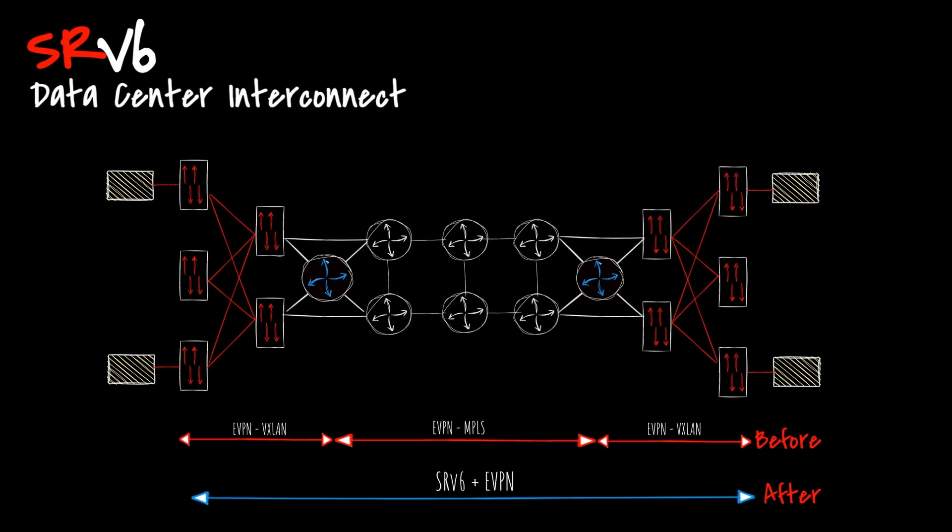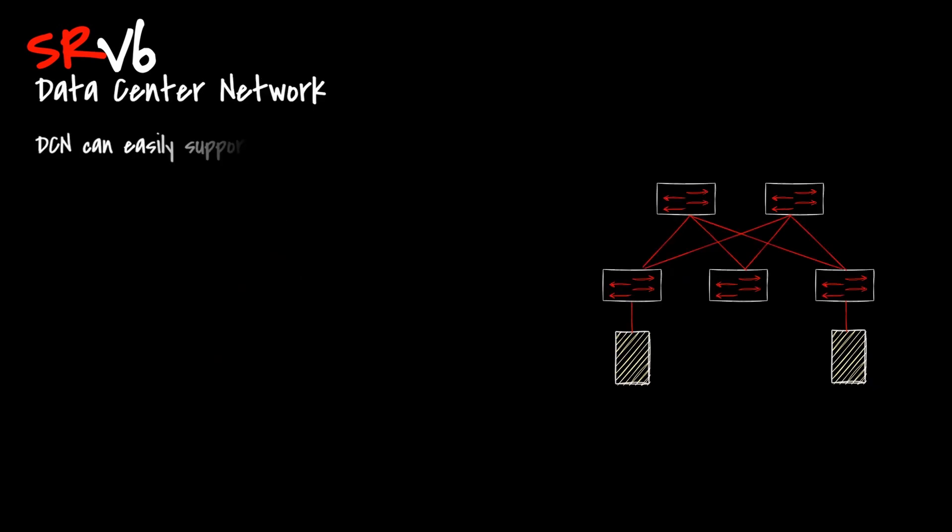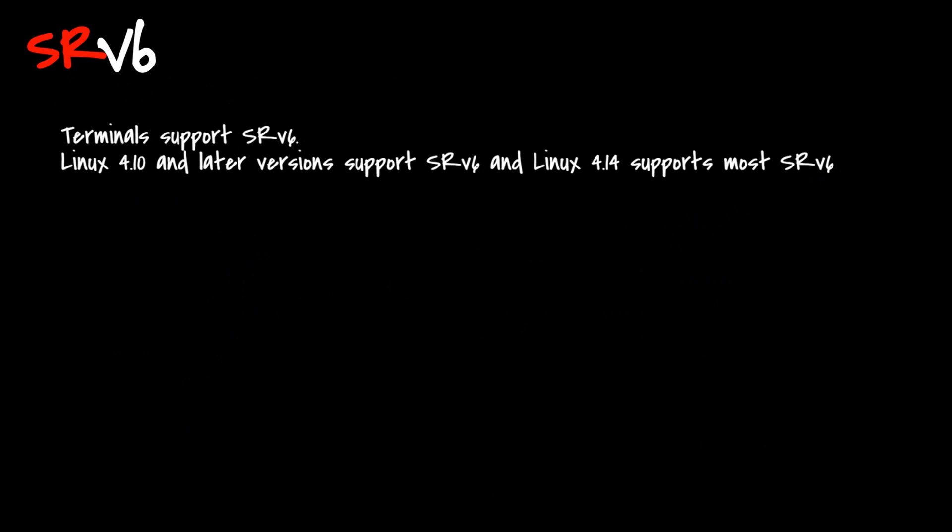The basic IPv6 header ensures communication between IPv6 nodes, and multiple IPv6 extension headers provide various functions. SRv6 unlocks the value of IPv6 extensibility and helps build simplified end-to-end programmable networks, implementing unified service forwarding and connectivity of everything through one network. In DCN, it can easily support IPv6. With SRv6 technology, carrier networks can deploy in data centers and even extend to user terminals as well.